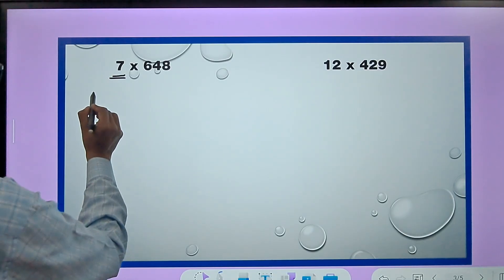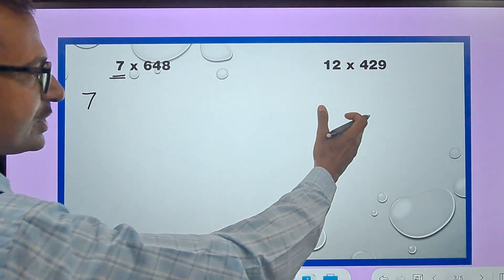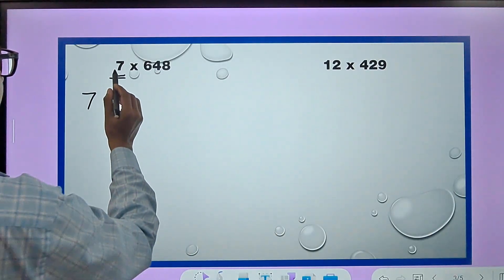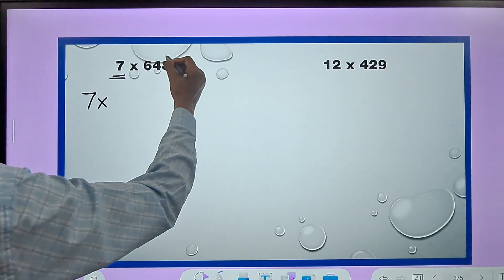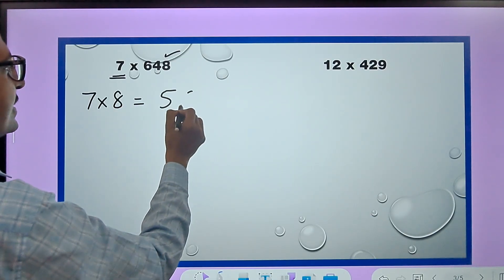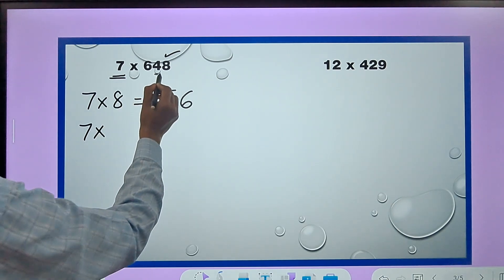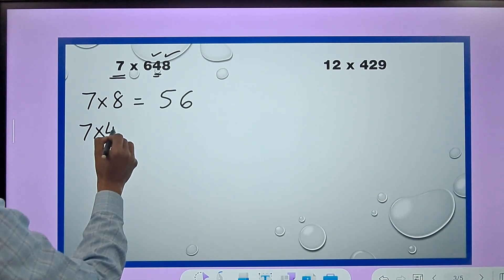If you multiply 7 times - see, I am writing all the steps for the first question but for subsequent questions I will not write all the steps. 7 times the unit digit here is 8, so this is 56. Now 7 times the 10th digit - the 10th digit is 4 here - so 7 times 4 is 28. I will write 28 but since 4 is in the 10th place, I will put a 0, or suffix a 0 with this product.